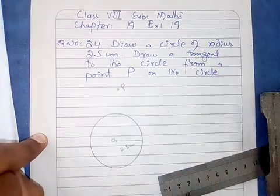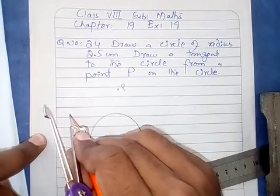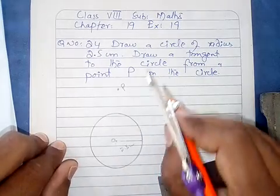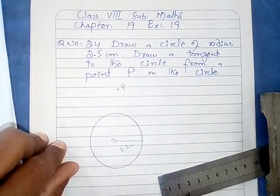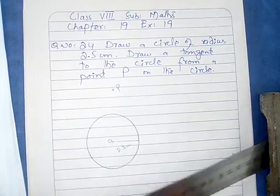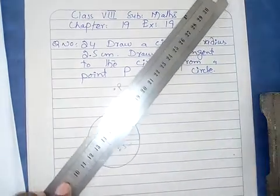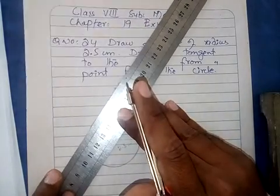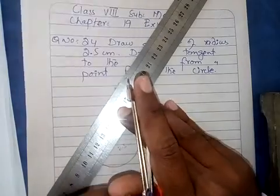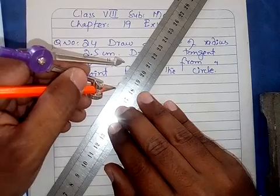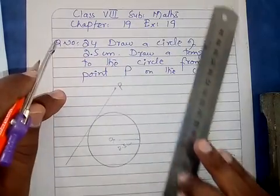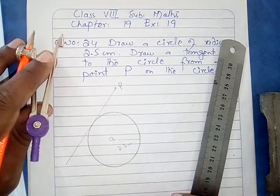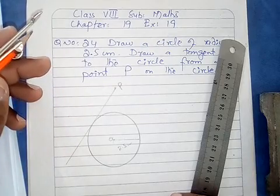یہ P point ہے۔ آپ point ادھر بھی consider کر سکتے ہیں، یہاں پر بھی، ادھر بھی — on the circle لکھا ہوا ہے تو circle کے اوپر point consider کرنی ہے۔ اب اسی point سے ایک tangent draw کرنا ہے۔ Tangent یعنی وہ line جو circle کی صرف اور صرف ایک point کو touch کرے — اسے tangent line بولا جاتا ہے۔